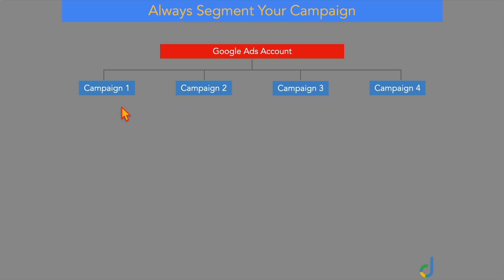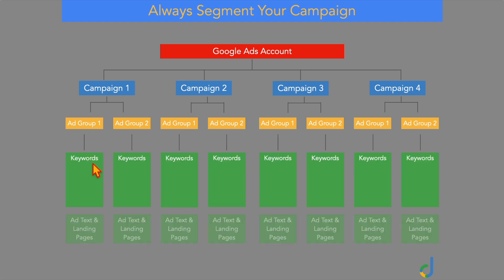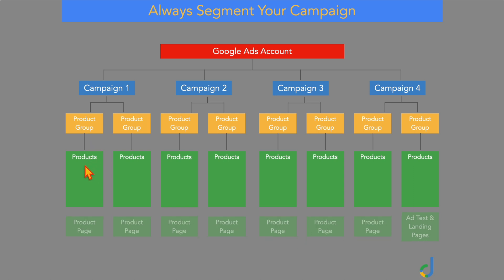The correct segmentation for search campaigns has individual campaigns with individual ad groups targeting individual keyword themes, then those specific ad texts and landing pages relating to each keyword theme. For shopping campaigns, you have campaigns with individual product groups, individual products under each group, and individual product searches going to the relevant product page. This structure lets you see which parts of your campaign are successful and quickly pause underperforming parts wasting your budget.